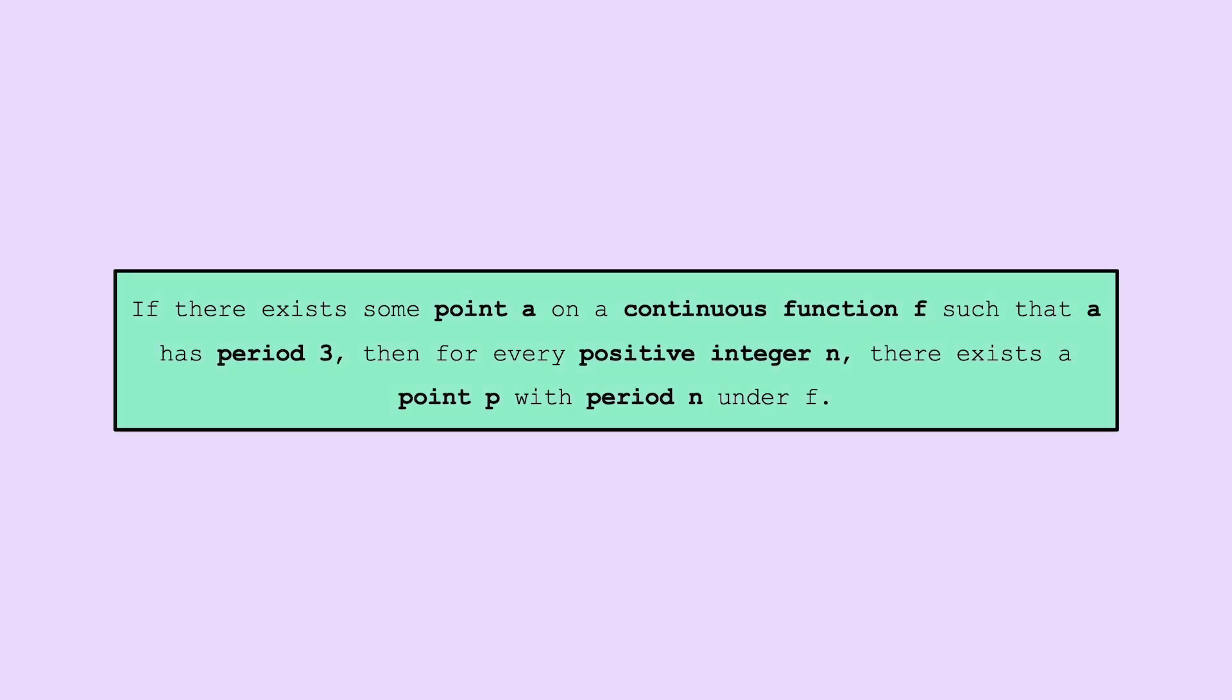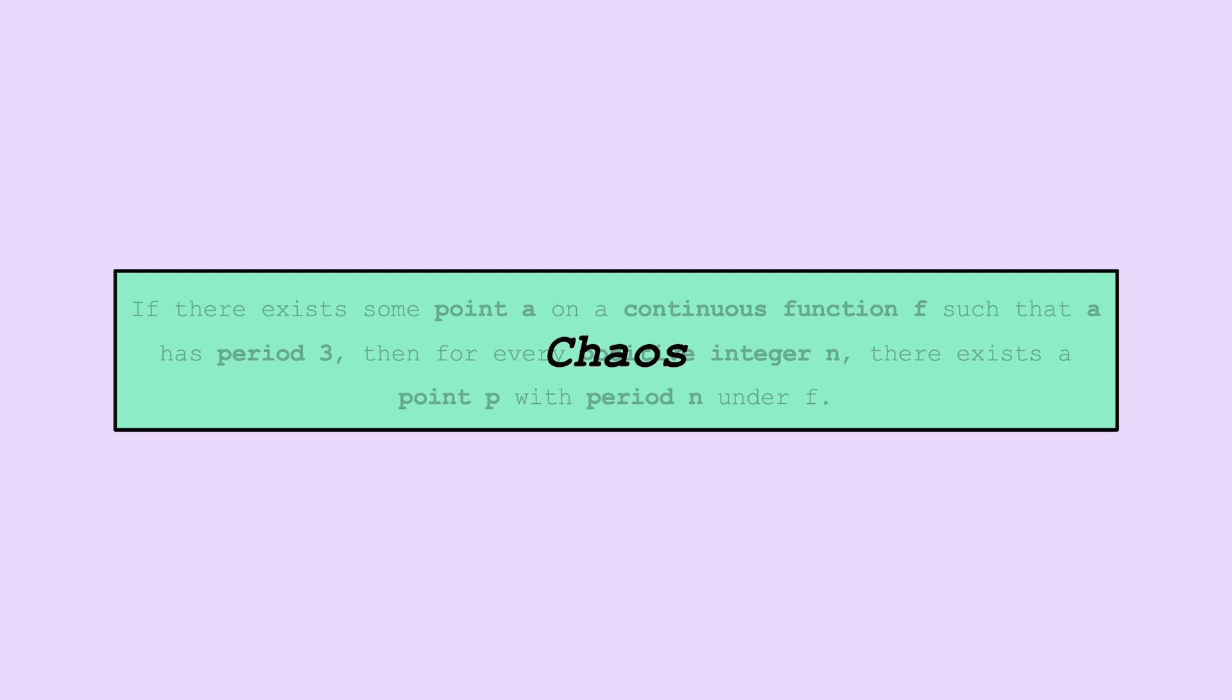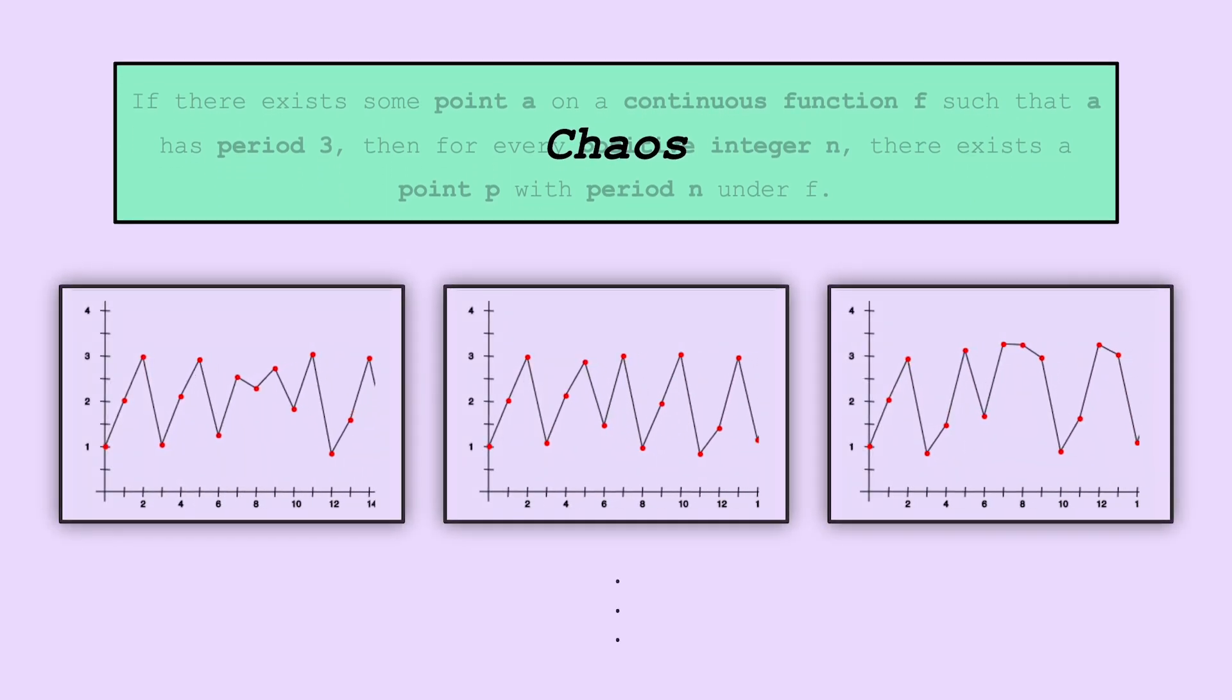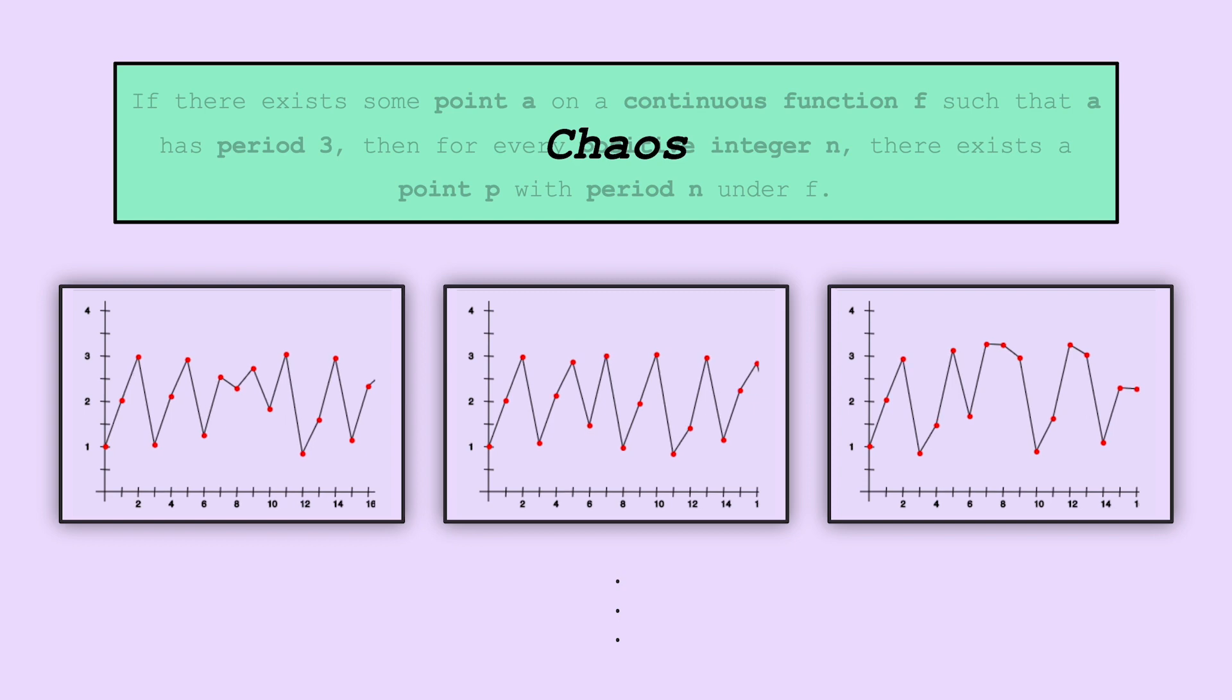If you're like me, this theorem itself is already very beautiful, but it does actually have important implications in another quite interesting area of math: chaos. We proved that there are infinitely many periodic points of a function, and it turns out this implies there's an uncountable number of points which behave chaotically, never approaching a periodic point.